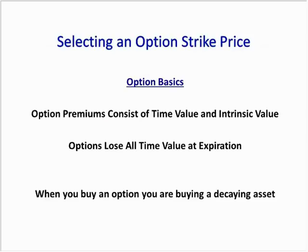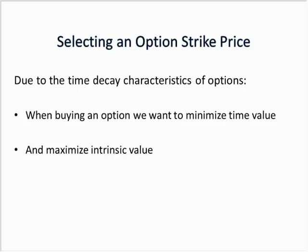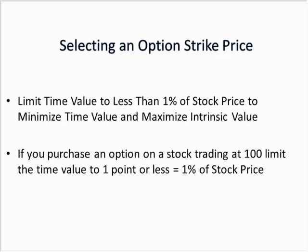Option premiums consist of time value and intrinsic value, and options lose all time value at expiration. When you buy an option, you're buying a decaying asset — each day that call option is going to lose a little bit of time value, and at expiration there's no time value left. So due to these time decay characteristics, when we buy an option we want to minimize the time value and maximize the intrinsic value.